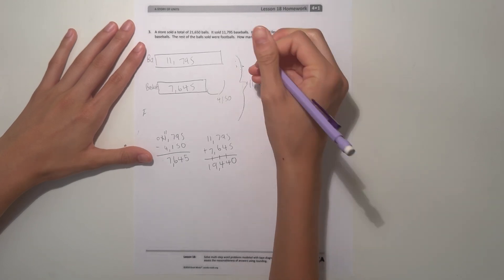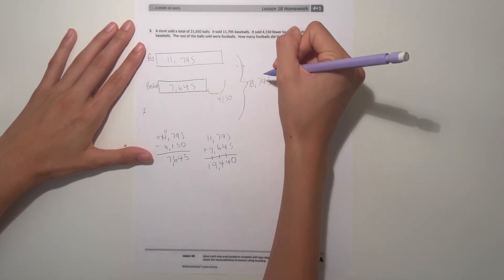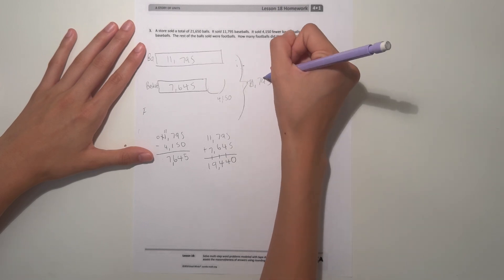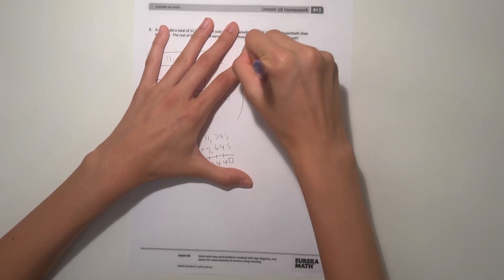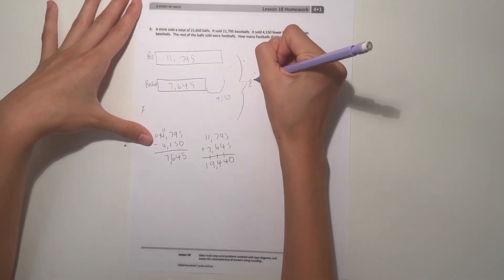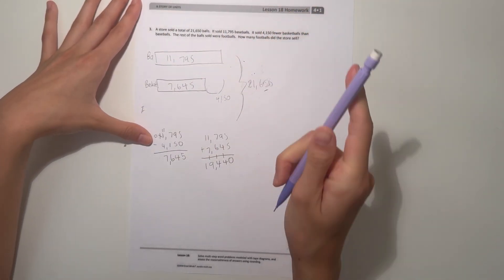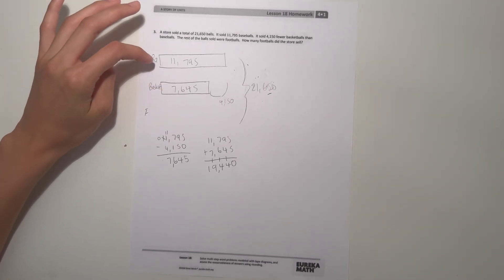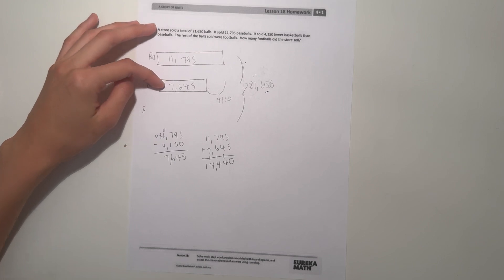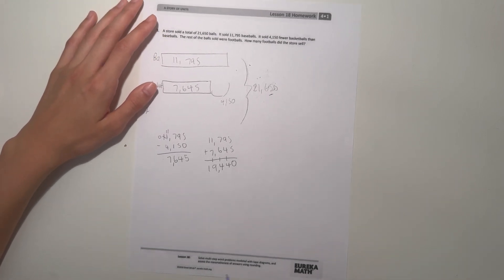So we got 19,000... oh wait, I wrote the total wrong. The total was 21,650. Our answer we got 19,440, so that's how much baseballs and basketballs are combined.